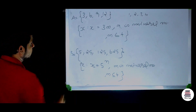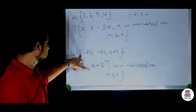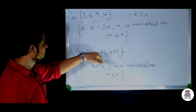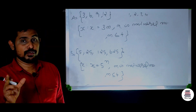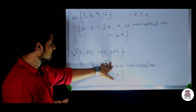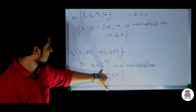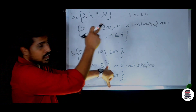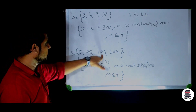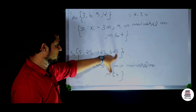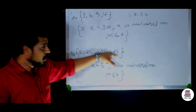For the set {5, 25, 125, 625}: 5 = 5 raised to 1, 25 = 5 raised to 2, 125 = 5 raised to 3, 625 = 5 raised to 4. An arbitrary element may be written as 5 raised to n, where n is a natural number and n is less than or equal to 4. In set builder form: x such that x = 5 raised to n, n is a natural number, n ≤ 4. This is the roster formula converted to set builder formula.